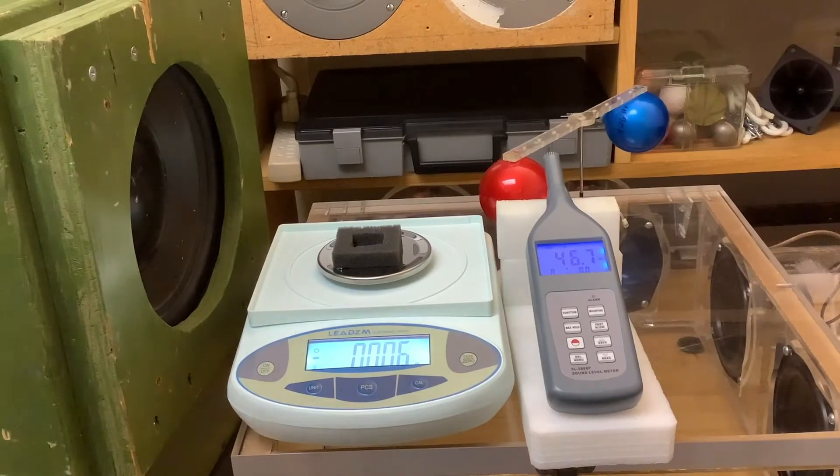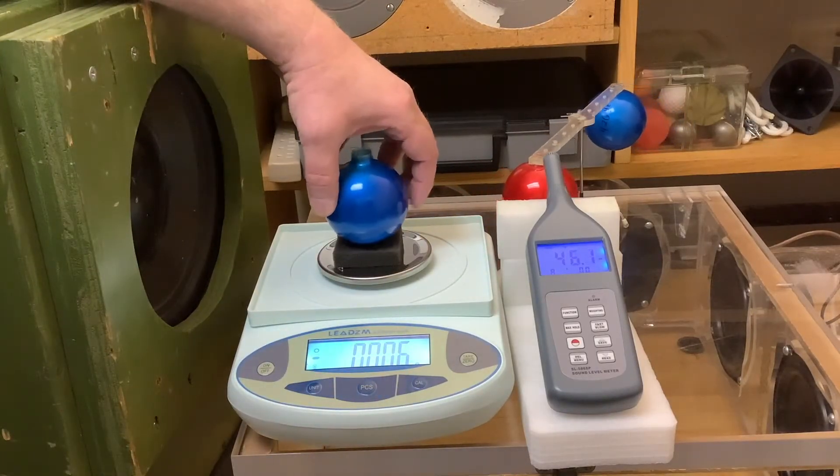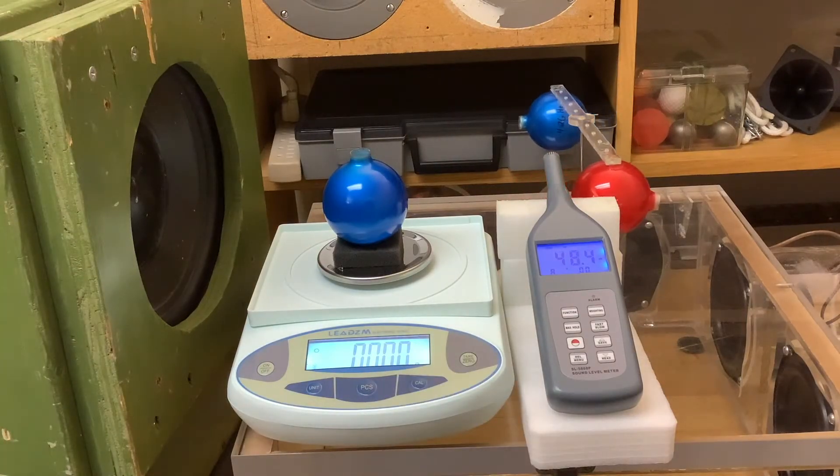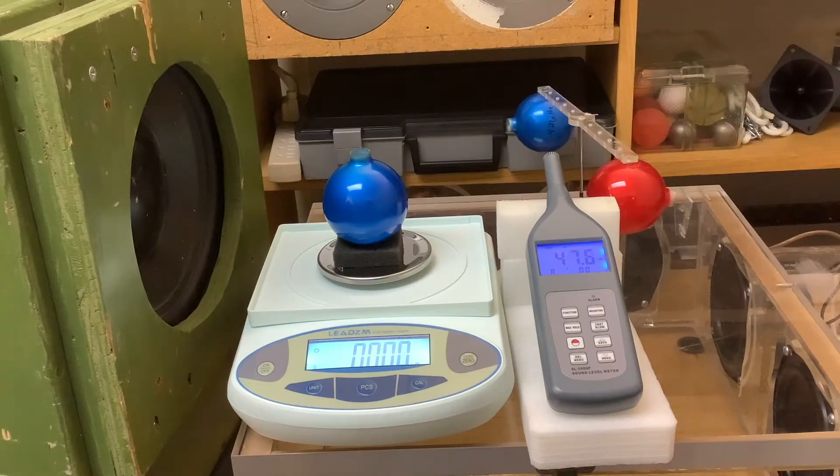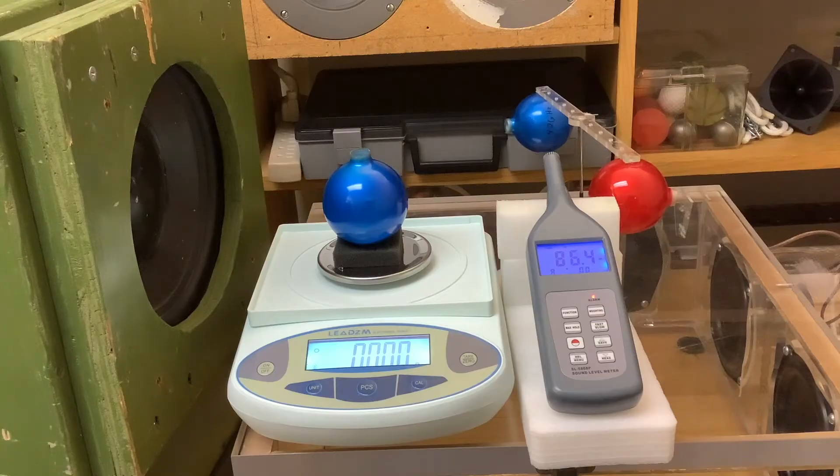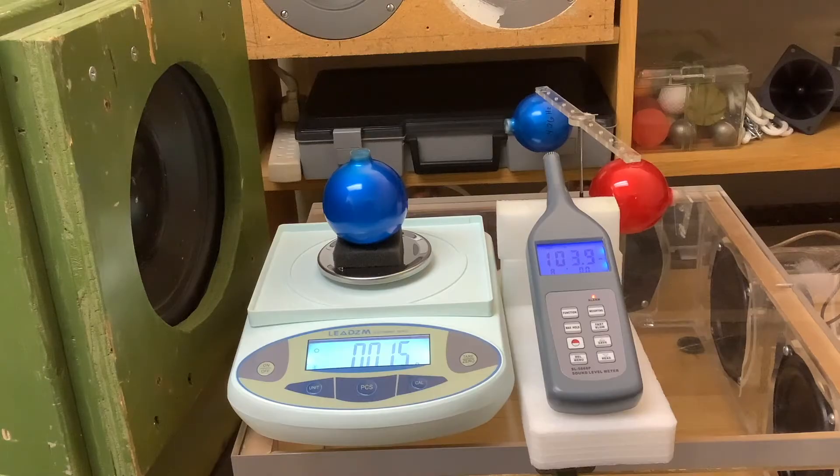While creating an earlier version of this demonstration, I thought of another way to quantitatively measure the thrust. A resonator is placed on a pan balance and the balance is zeroed. A sound level meter records the sound pressure level, and the amplitude of the sound is increased until the pan balance begins to read an excess mass resulting from the thrust pushing the resonator downward on the scale. I'll note that the sound level meter is approximately twice the distance from the loudspeaker compared to the resonator opening, so the sound pressure level at the mouth of the resonator is about 6 decibels higher than what the meter is reading.